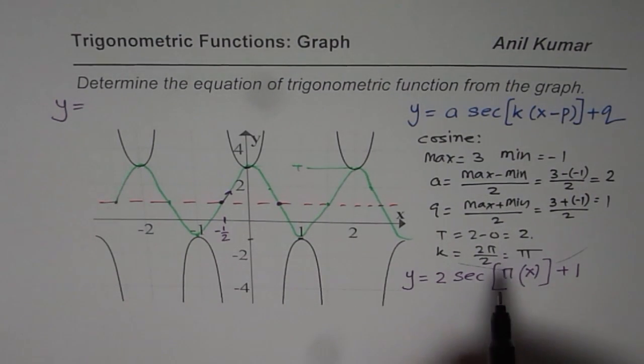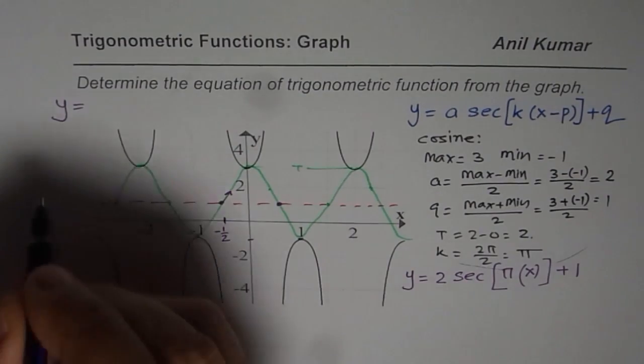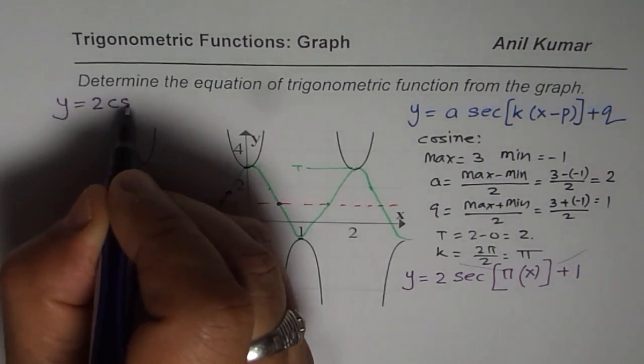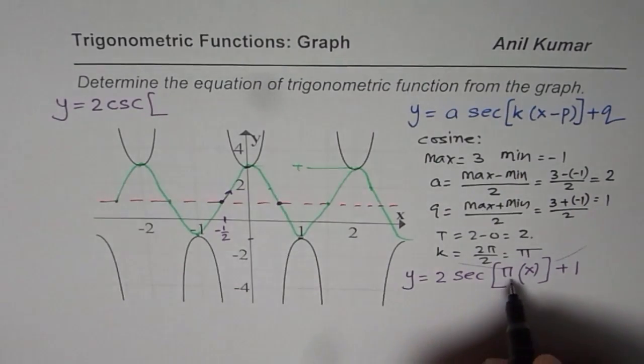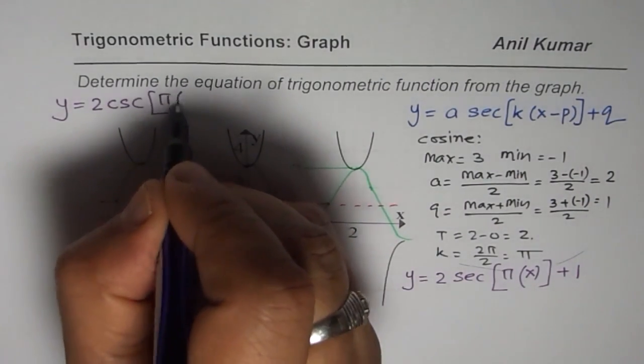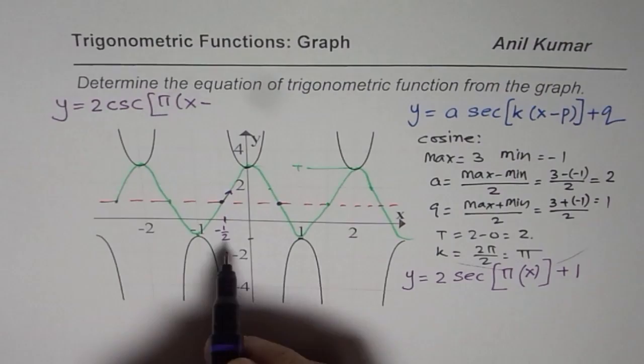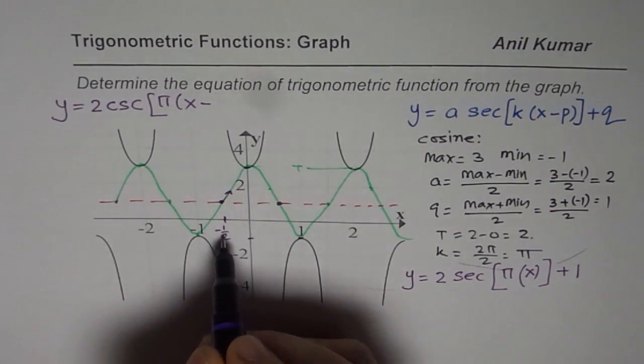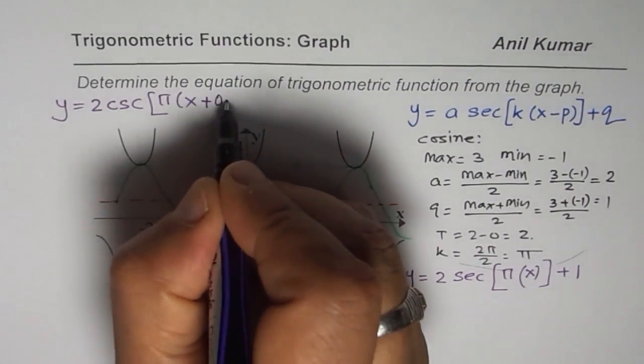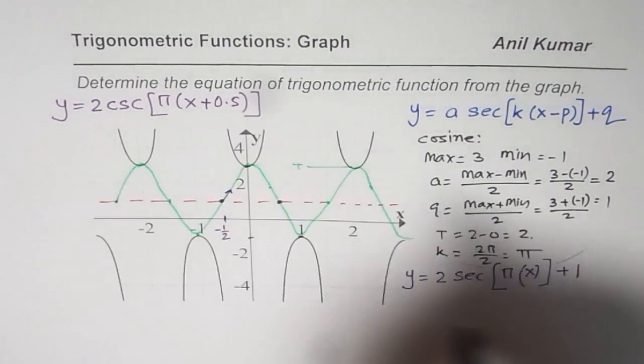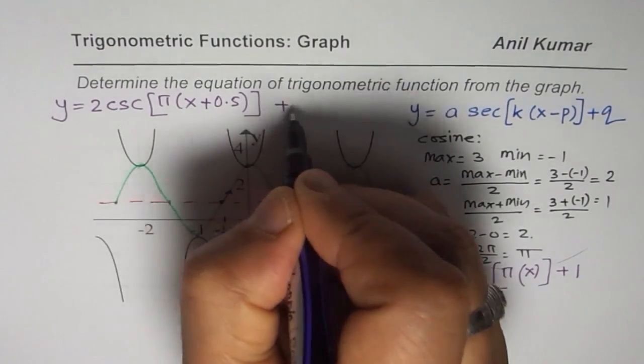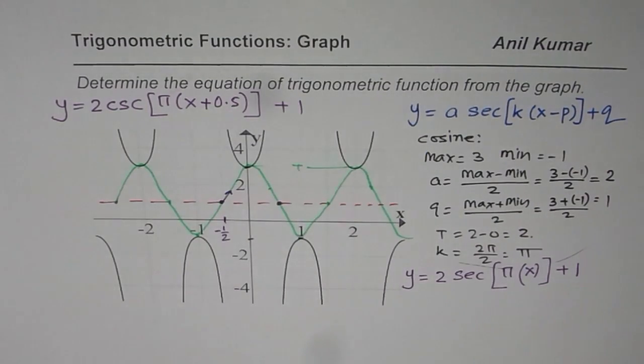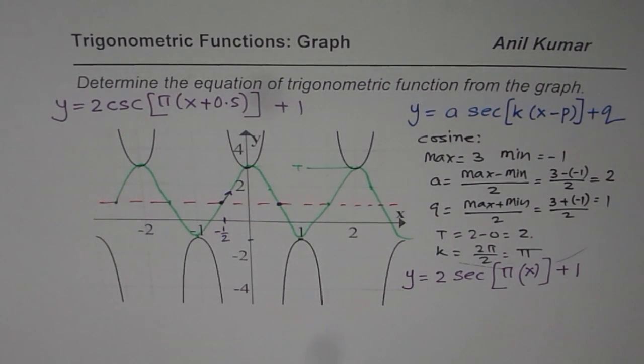So for a cosecant function it is going to be similar. Let me write that: y = 2 csc, the k value and x will be same. However there is going to be a phase shift. Now moving half units to the left means plus 0.5. And the x axis is moving one unit up. So you could also write cosecant function for the same graph.